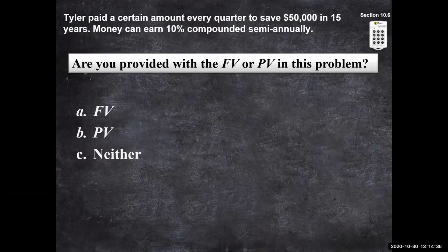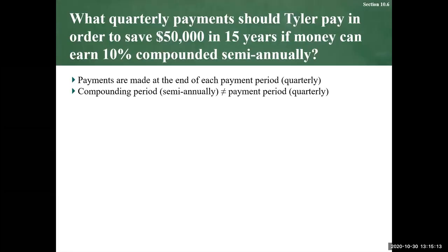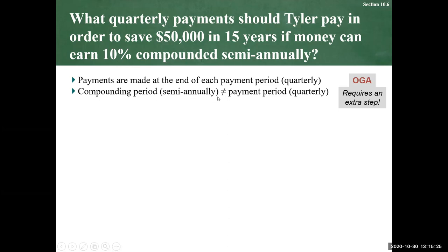One thing we'll have to keep track of is identifying whether we have a future value or a present value in a particular situation. In this example, Tyler paid a certain amount every quarter. We don't know how much, but he was saving $50,000 in 15 years. We need to determine: is that $50,000 a future value or a present value? It's actually a future value because it's an accumulated savings. The payments are made at the end of each period quarterly, and the compounding period is semi-annual at 10%, which doesn't equal the quarterly payment period — so we have an ordinary general annuity, which requires an extra step calculation.